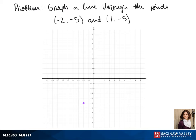Notice that both of our y values are the same. First we go negative 2 on the x and down 5, then forward 1 on the x and down 5. Next we connect our points, and notice that our line is a horizontal line.